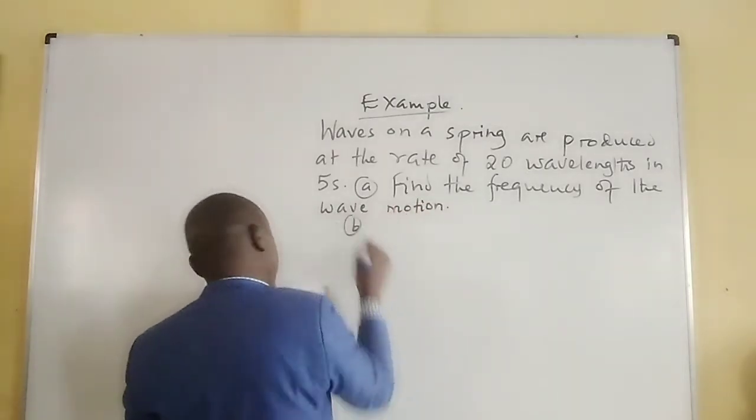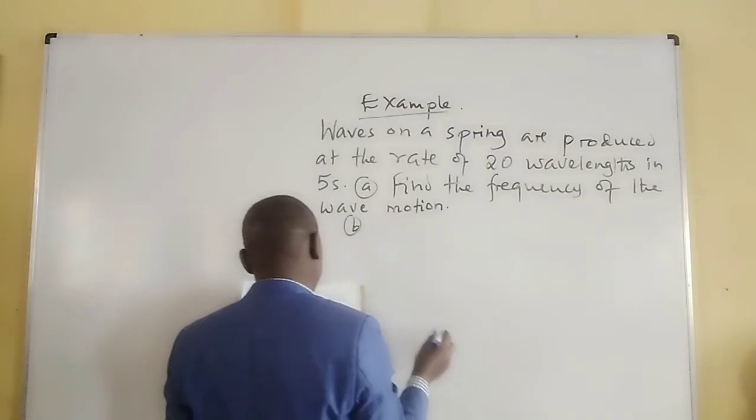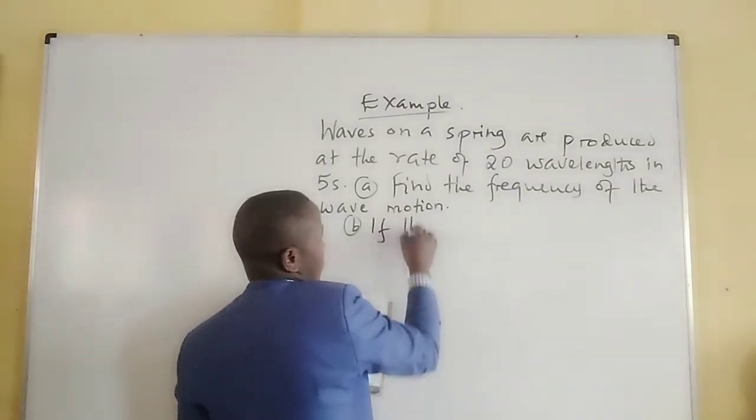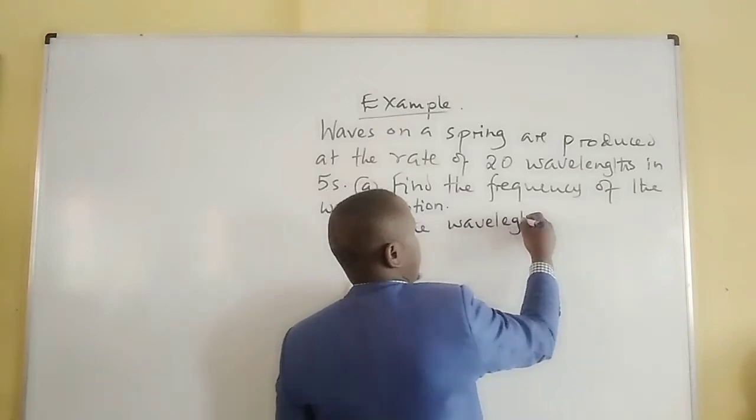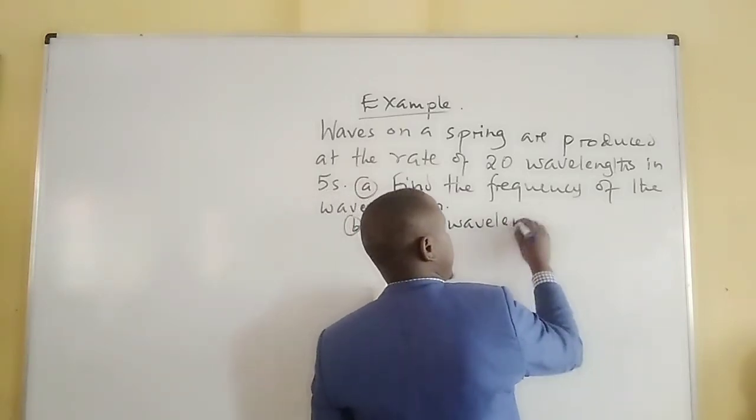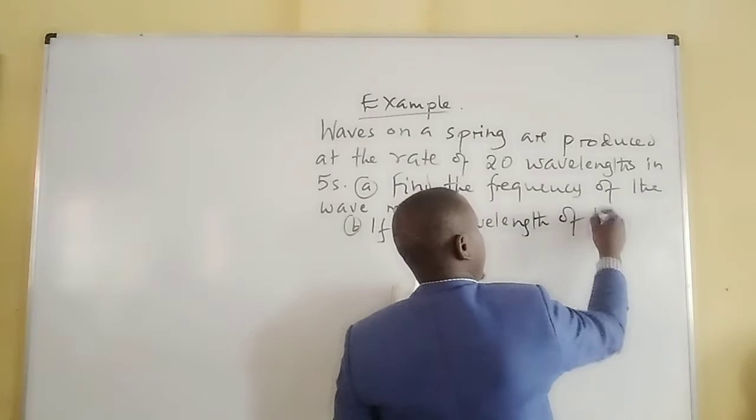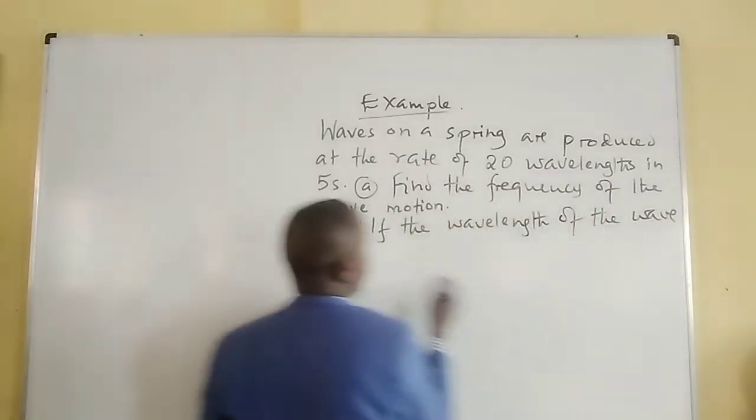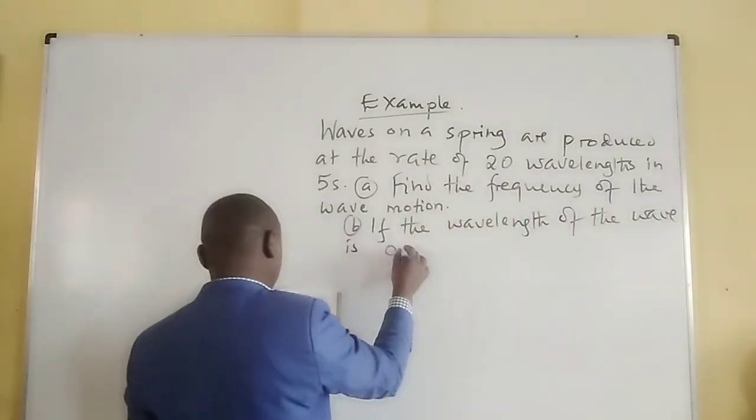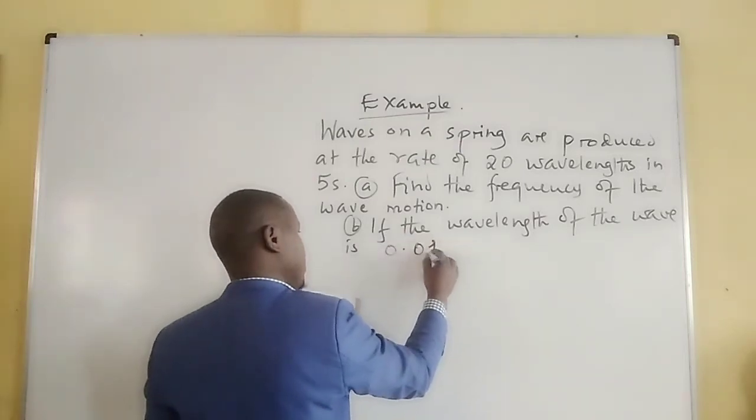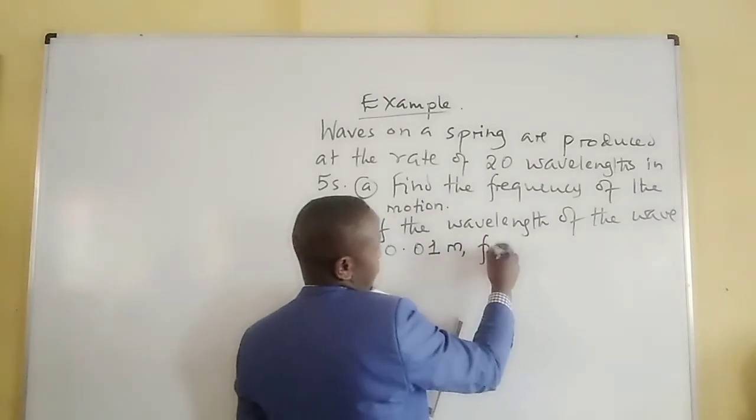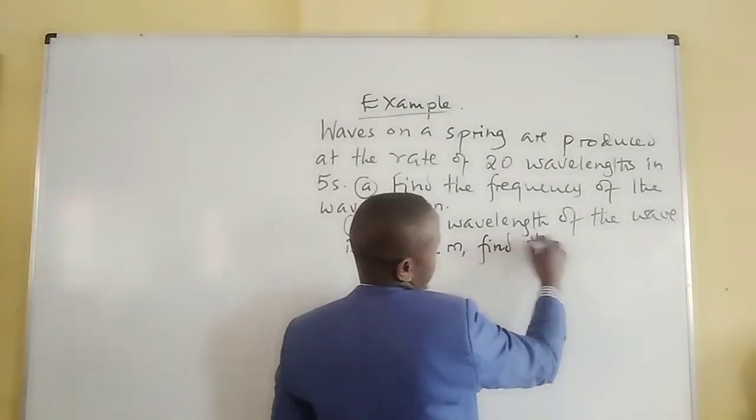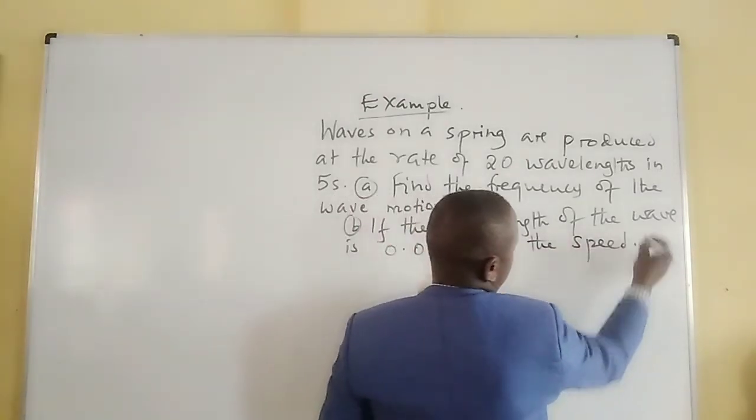Part B: If the wavelength of the wave is 0.01 meters, find the speed of the wave.